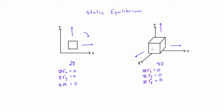We also have to consider rotation. If this object were rotating in a direction corresponding to rotation about the x-axis, we need the sum of moments about the x-axis to be zero, otherwise it would tend to rotate. Similarly, the sum of moments about the y-axis must be zero, and the sum of moments about the z-axis must also be zero for static equilibrium.